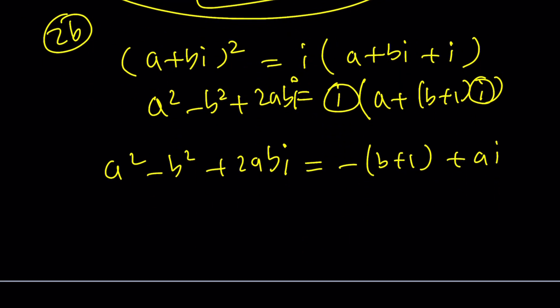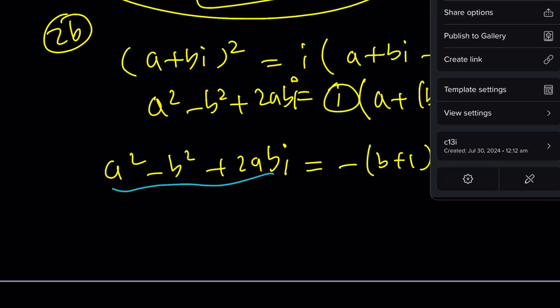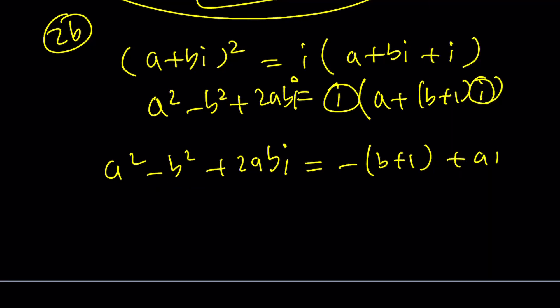And if you now compare the real parts to real parts, oops, that wasn't the real part, obviously, then you'll be getting something like this. This is the real part. That's the real part. They should be equal. This is the imaginary part. That's the imaginary part. They should be equal. Make sense? From there, you should get the values for a and b. And therefore, the solutions.